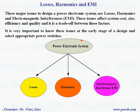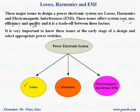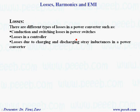Three major issues in designing power electronic systems are losses, harmonics, and EMI — electromagnetic interference. These issues affect system cost, size, efficiency, and quality, and there is a trade-off between these factors. It is very important to know these issues at the earliest stage of a design and select appropriate power switches.